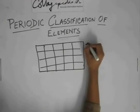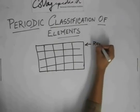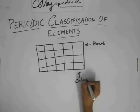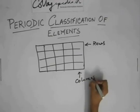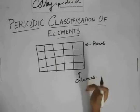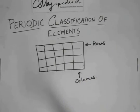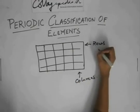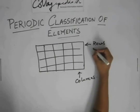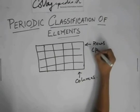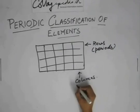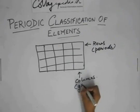So, these are the rows, and these are the columns. Now, in the periodic table, or Newland's law of octaves, the rows are known as periods, and the columns are known as groups.